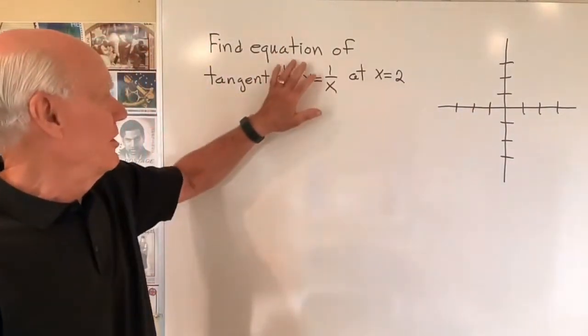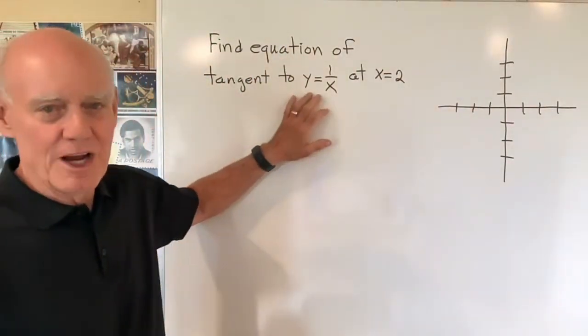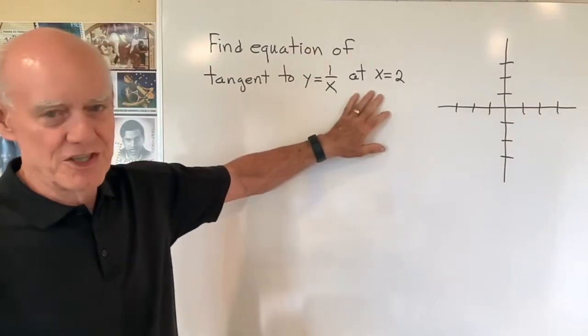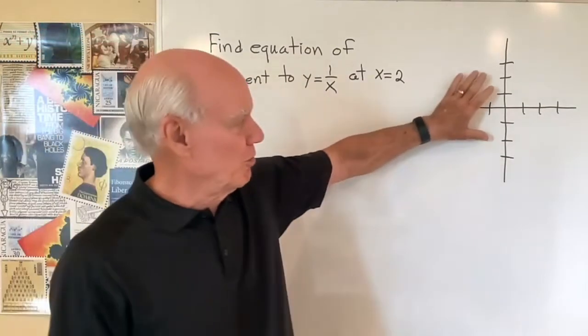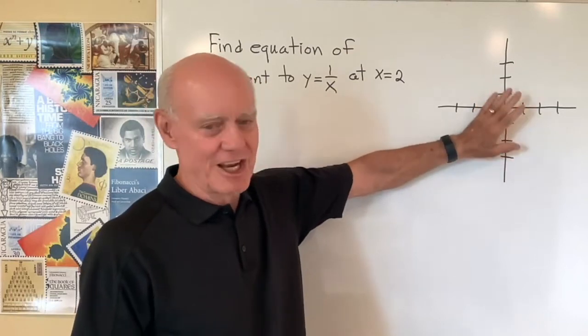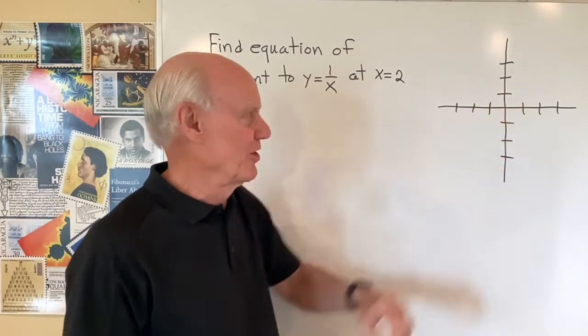Okay, a quick one right here. We want to find the equation of the line tangent to y equals one over x when x is equal to two. I put a little coordinate system over here, pretty rough looking, but we can get an idea if our answer is correct by looking at this.